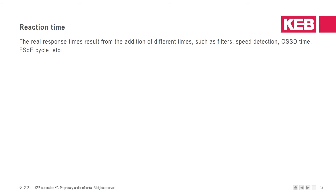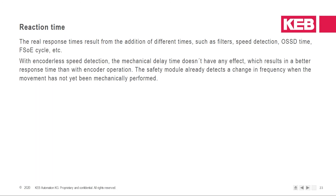Reaction time: the real response time results from the addition of different times such as filter, speed detection, OSSD time, FSOE or bus cycle, etc. With encoderless speed detection, the mechanical delay time does not have any effect, which results in a better response time than with encoder detection. It takes a little time to change the magnetic field in the motor, and the safety module always detects a change in frequency when the movement has not yet been mechanically performed.